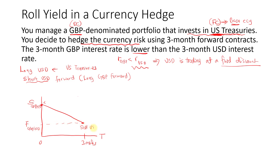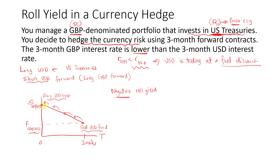Since you sold the US dollar forward, you hold the contract for three months. Right before the contract expires, you close it by buying US dollar spot. If you sell something at a lower rate and then buy it back at a higher rate, you will have made a negative return. So the roll yield will be negative — because you sold low and then bought high. This is the cost of hedging in this case.